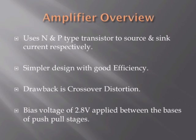A little bit of overview of the amplifier. The amplifier uses an N and P type transistor to source and sink respectively. The design is simpler and has a good efficiency. One of the drawbacks for this design is the crossover dead zone or the voltage differential between the active region points of the push-pull stages. This can be overcome with the class AB design.